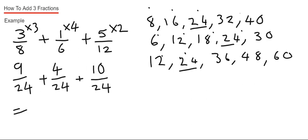Now we have common denominators, we can just add the numerators together. So 9 add 4 add 10 gives us 23, and you just keep the denominator the same. That's our final answer.